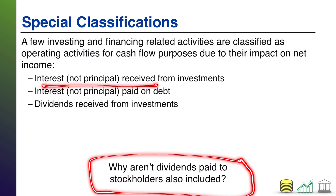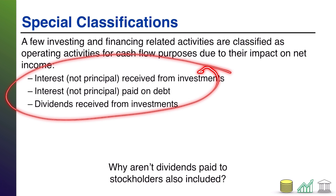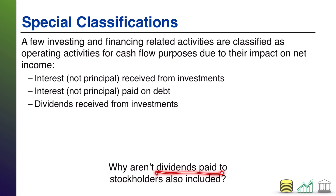Here's a question for food for thought: why aren't dividends paid to stockholders also included in this exception list? Dividends paid are on the financing slide. Dividends paid don't go on the income statement — they come out of retained earnings and don't affect net income, therefore they don't fall under this exception. The only reason those other items are exceptions is because they go on the income statement. Dividends paid do not, so dividends paid remains a financing activity.